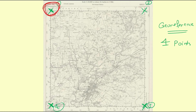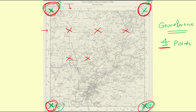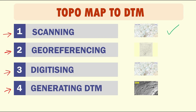So you have a set of coordinates at each corner that you can use for georeferencing. As I mentioned, at least four points are needed, but I recommend using additional points to improve the accuracy of your georeferencing process. For example, you can select intersection points of grid lines and distribute your points throughout the map to cover it well and produce an accurate digital terrain model.